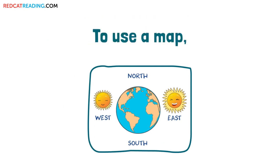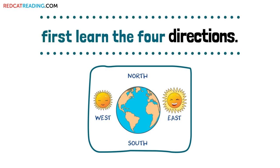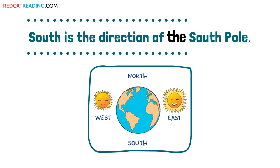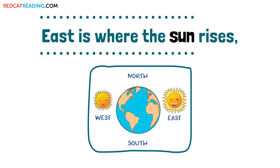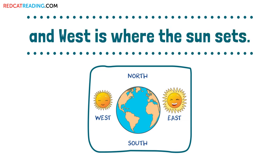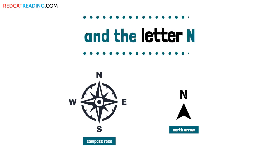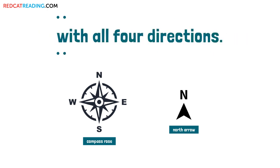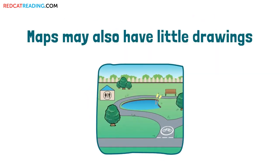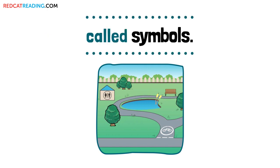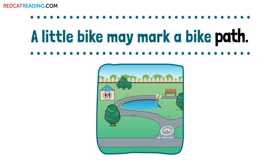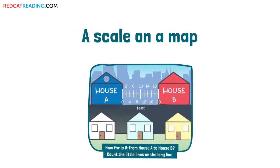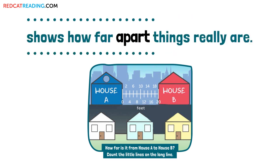Parts of a map. To use a map, first learn the four directions. North is the direction of the north pole. South is the direction of the south pole. East is where the sun rises. And west is where the sun sets. Maps may have an arrow and the letter N to show which way is north. They may instead have a compass rose with all four directions. Maps may also have little drawings called symbols. A little bike may mark a bike path. Cities and parks use a symbol to help people find bathrooms. A scale on a map shows how far apart things really are.